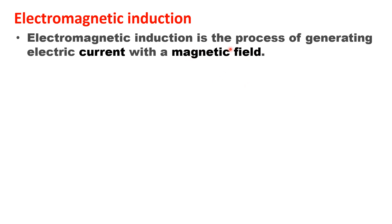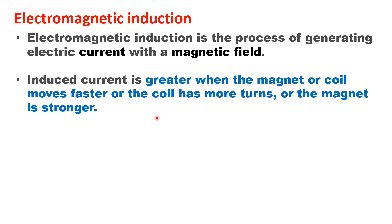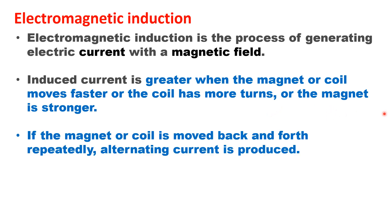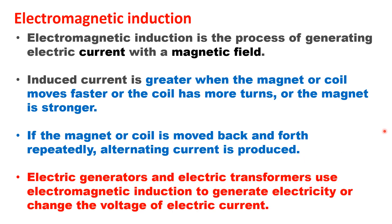Electromagnetic induction is the process of generating electric current using a magnetic field. The induced current is greater when the magnet or coil moves faster, when the coil has more turns, or when the magnetic field is stronger. Moving the magnet or coil back and forth repeatedly produces alternating current. Electric generators and transformers use electromagnetic induction to generate electricity.